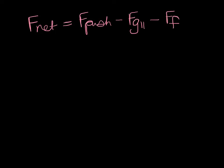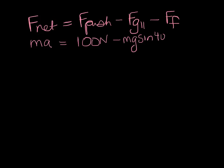Since we're going up the ramp, we make up the ramp the positive direction and down the ramp the negative. Our net force equals our push minus our friction force minus the force of gravity parallel. So: mass times acceleration equals 100 newtons, minus Fg parallel (mass times gravity times sine of 40 degrees), minus the force of friction (mu times mass times gravity times cosine of 40 degrees). Notice that this 100-newton term doesn't have mass in it, so we actually do need the mass of the box — a heavier box requires more force to push.